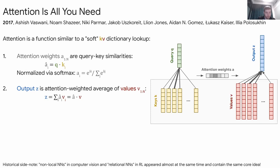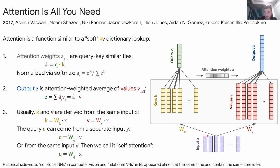Where do these keys, values, and queries come from? You have some input set of vectors, and you transform them with a learnable linear mapping into both keys and values — that's your dictionary. You usually have a different set of vectors from which you derive the query. Then you do the attention operation, get the output, and do further processing.